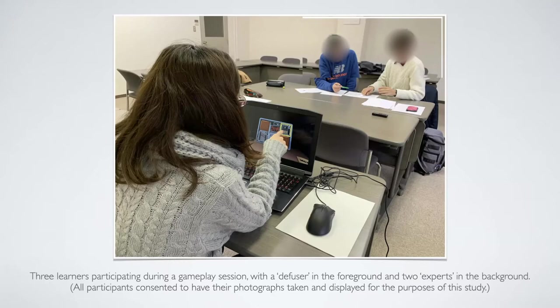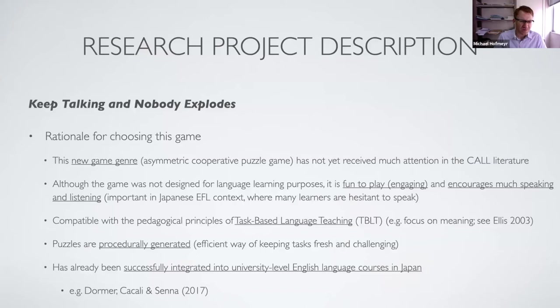Why did I choose this game specifically? There are several reasons. This is a new genre of game that hasn't been studied much — really not at all — in the core literature. This genre is called asymmetric cooperative puzzle games. Asymmetric means the different players have access to different information, so they're not looking at the same screen.